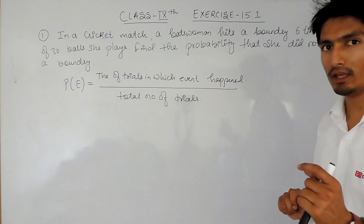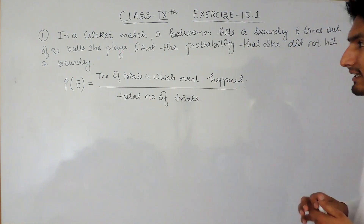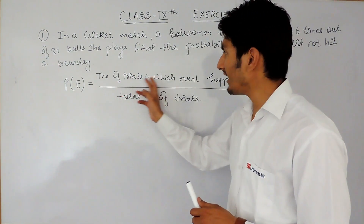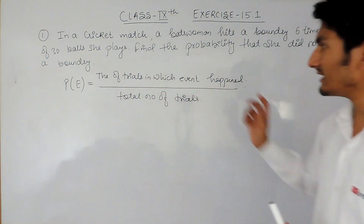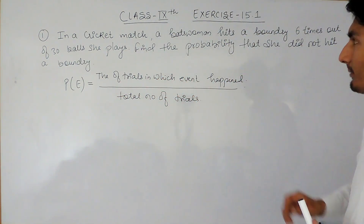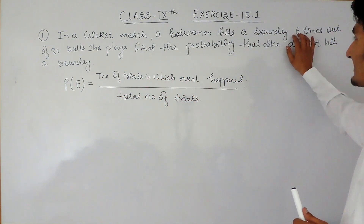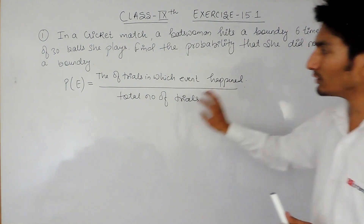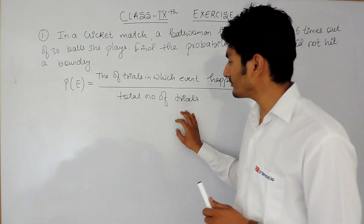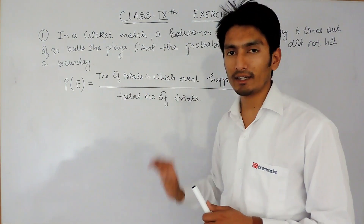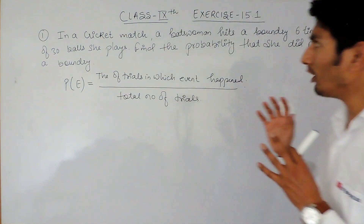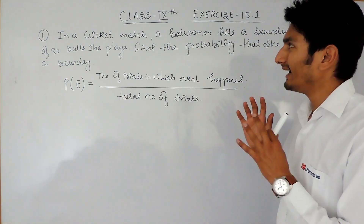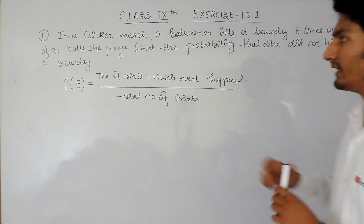The number of trials in which this event happened would be six, and the total number of trials would be 30. So the probability of this batswoman hitting a boundary would be 6 upon 30.